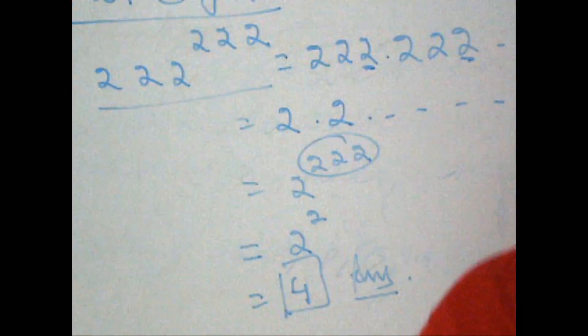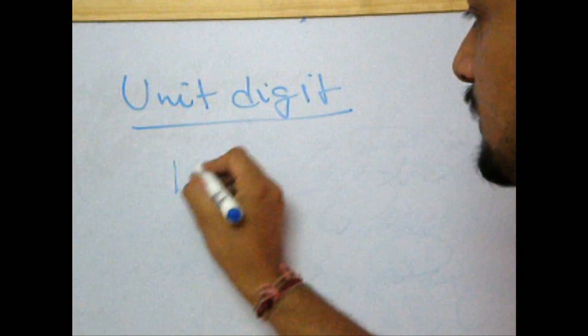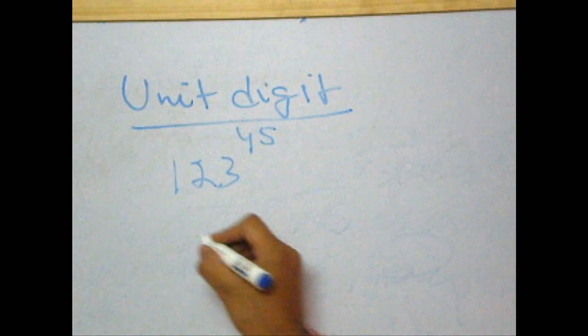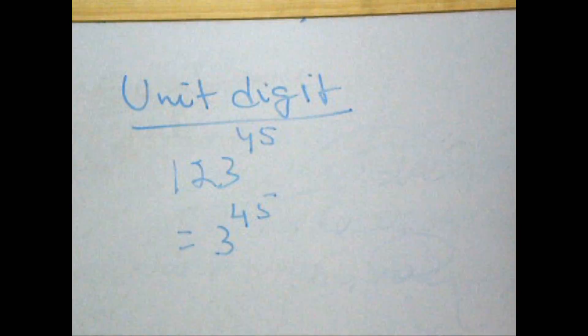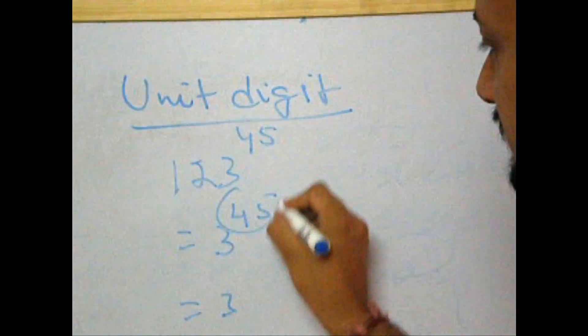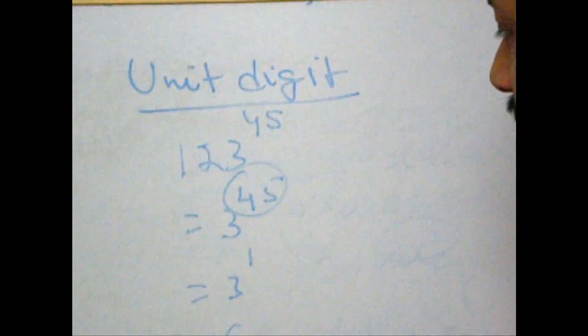Let's take couple of questions more to understand the question and be comfortable with it. Say for example, question is 123 to the power 45. Now, this question first of all is 3 to the power 45 for us. This is 3 to the power, divide 45 by 4, take the remainder 1, which is 3, and that's the answer.